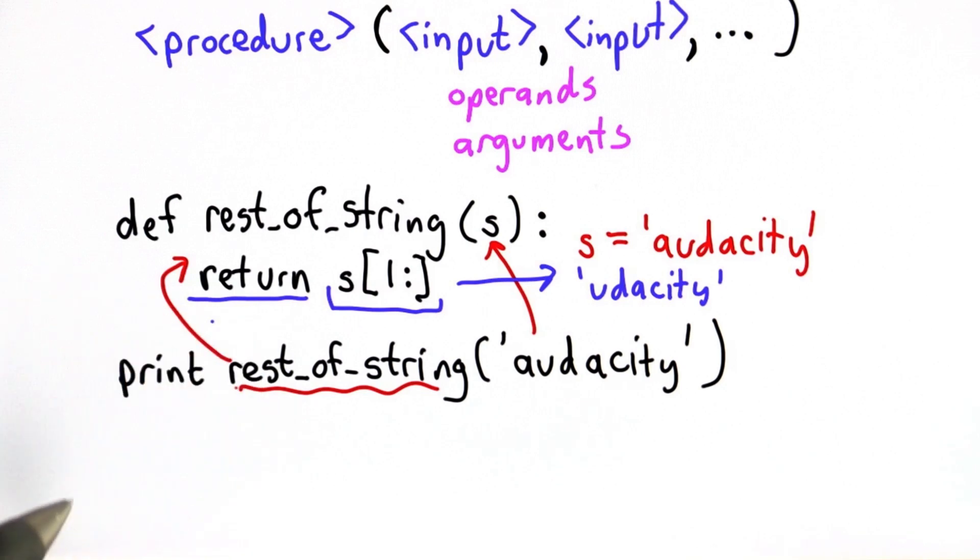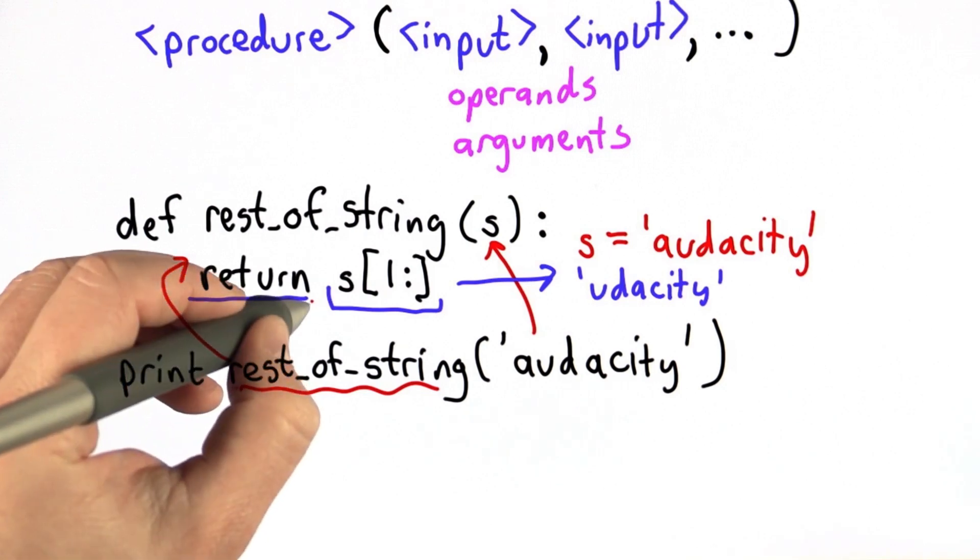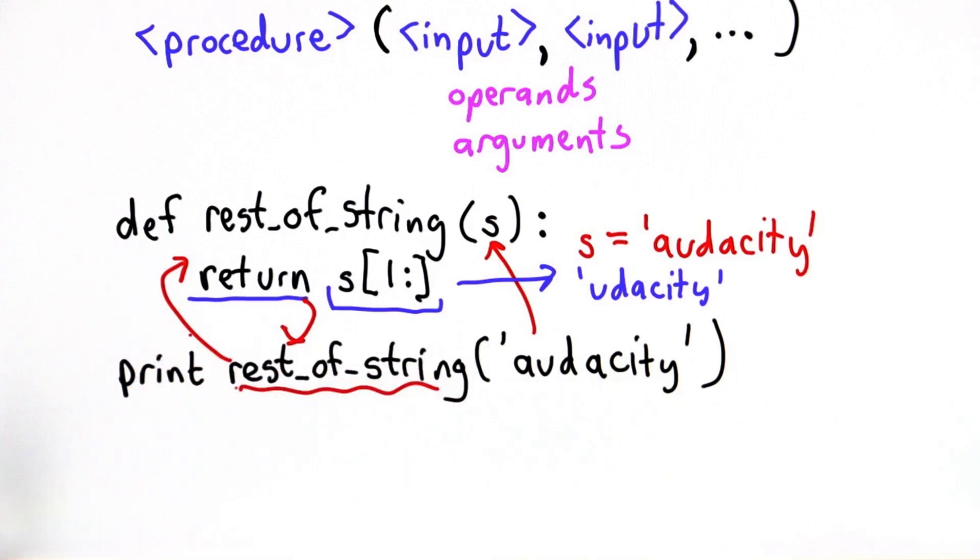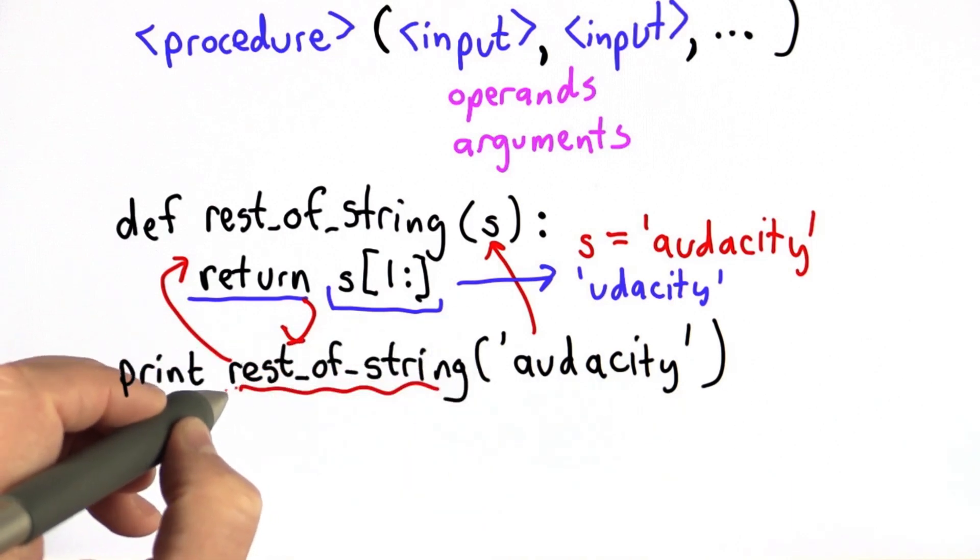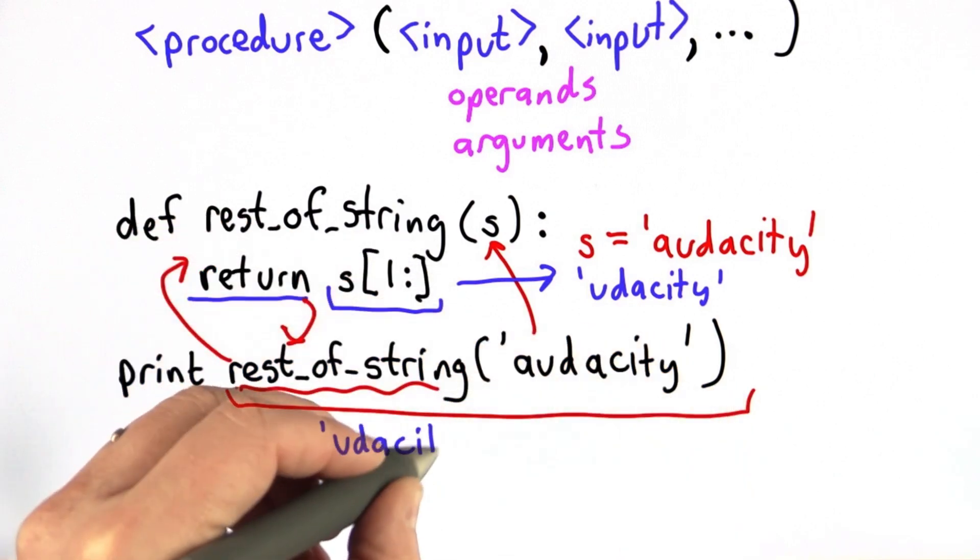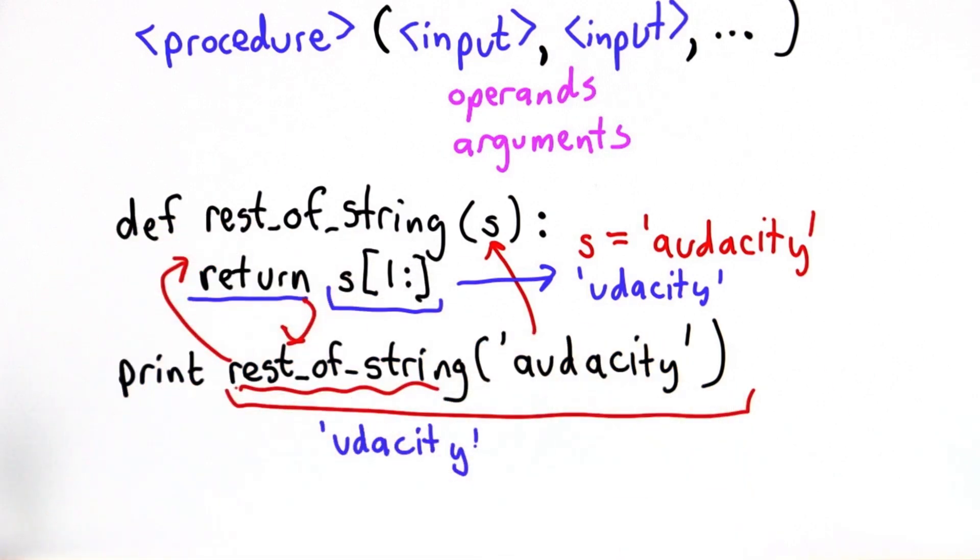And then we got to the return. What return means is we're going to jump back. We're jumping back to where we called the procedure, but now we actually have a result. So when we jump back, the value that this evaluates to is whatever value we returned. In this case, it's the string udacity.